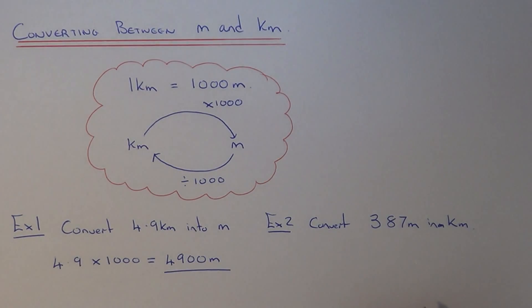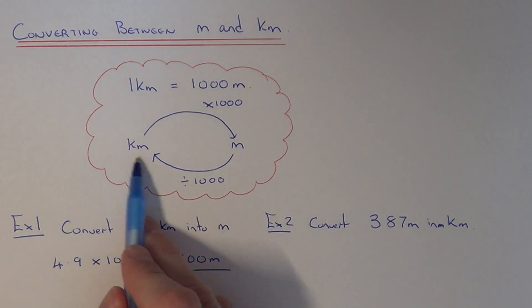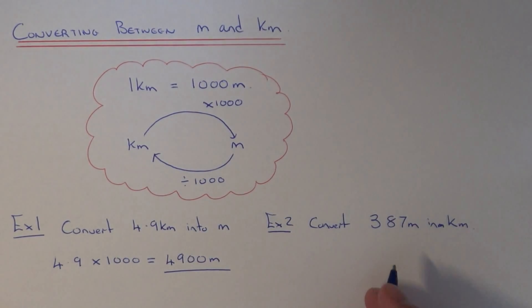Let's have a look at example two. This time we need to convert 387 meters into kilometers. Meters into kilometers, we need to divide our number by one thousand. So we need to work out 387 divided by a thousand. This will give us an answer of 0.387 kilometers.